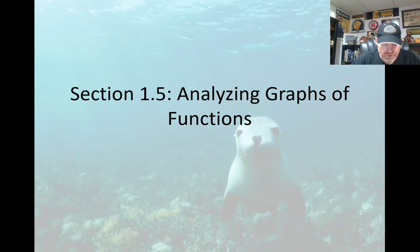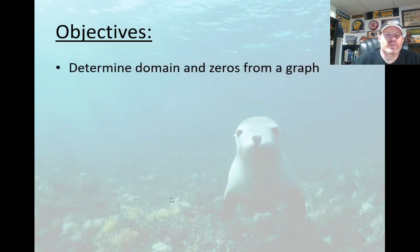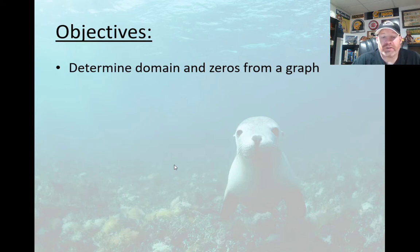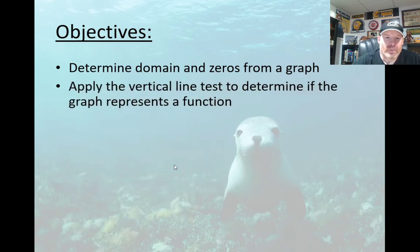Welcome back. We're going to talk about section 1.5, which is about analyzing graphs of functions. We're going to break this into four videos. This one is going to be about the domain and zeros. We talked in the last video about how to figure out the domain if you're given the equation of a function — figuring out the domain from a graph is even easier than that. We're also going to talk about another type of notation for domain and range, and we're going to talk more about the vertical line test.